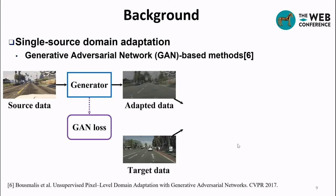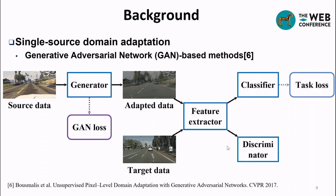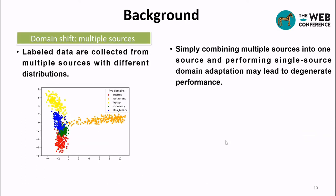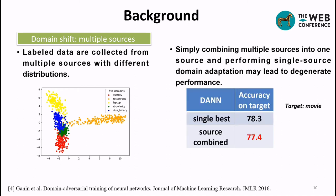These methods also try to align features of target data and adapted data by a discriminator. In practice, labeled data may be collected from multiple sources with different distributions. Combining these sources into one and performing single-source domain adaptation may lead to degenerate performance — for example, the best single-source DA accuracy is 78.3 while the source-combined accuracy drops to 77.4. So multi-source domain adaptation is necessary.